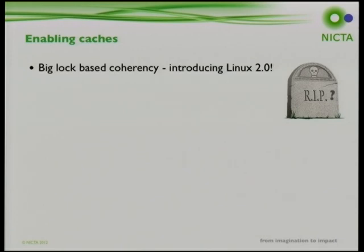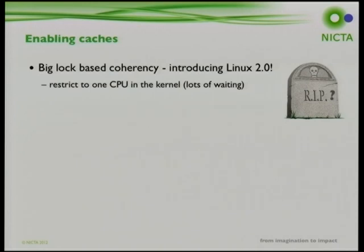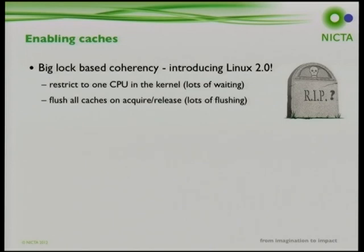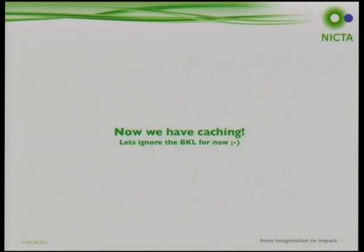We implemented a big kernel lock - yes, we know it was just removed from Linux - but it's an easy way to implement this cache coherency. It restricts one CPU to be in the kernel at a time. When a CPU enters the kernel it flushes all its caches to read the latest kernel memory from main memory, and when it leaves it flushes all caches to write changes back. This is slow; adding an interrupt to signal contention helped avoid unnecessary flushes, but this lock only applies between A9s and M3s, not between the two A9 cores themselves.